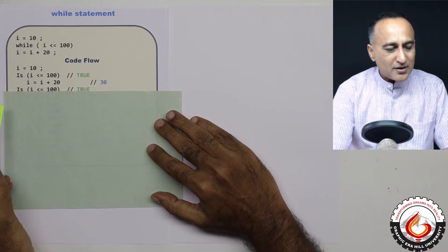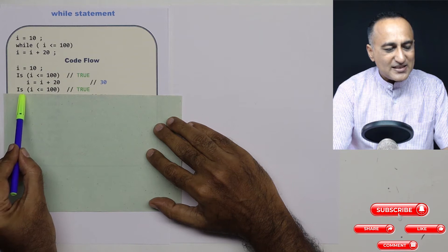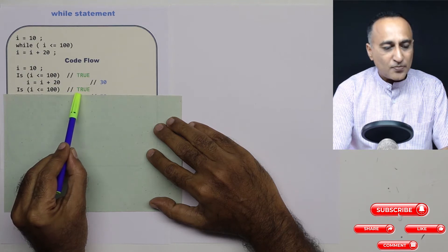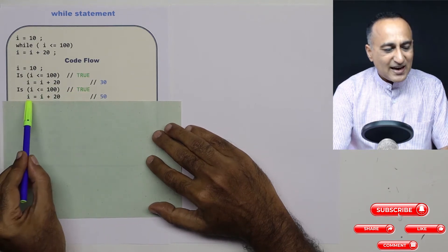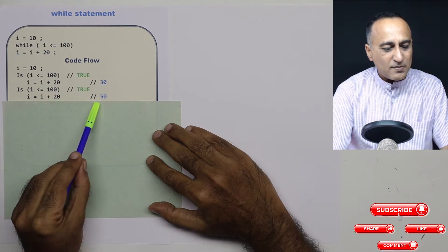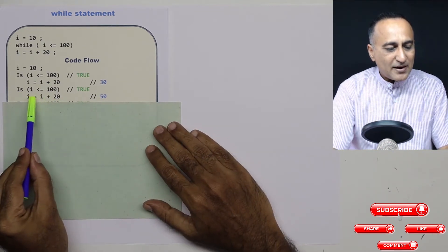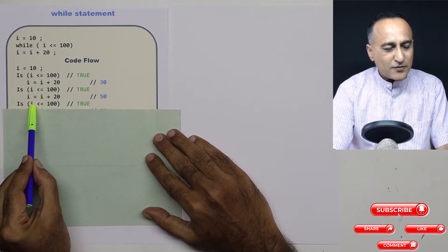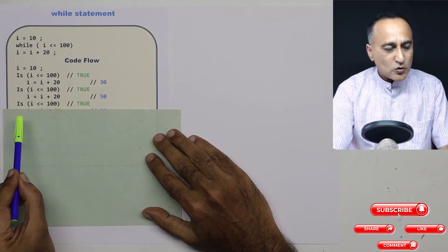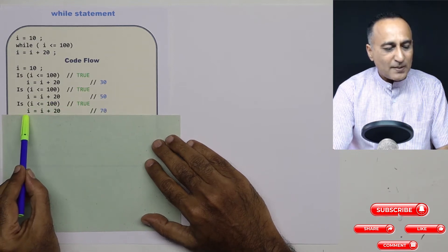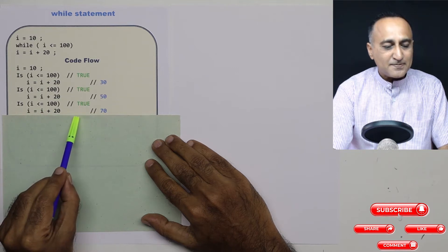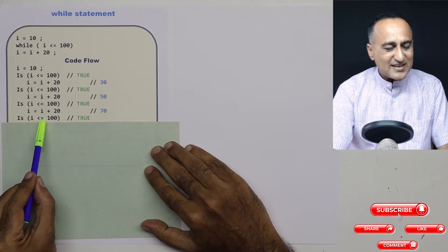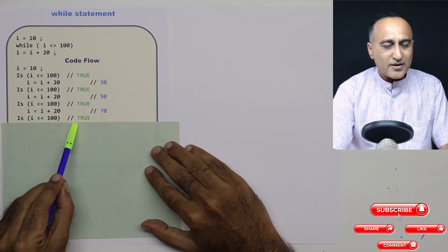In the next step, I am again comparing: is the value of i, which is 30, less than or equal to 100? This is still true, so i is going to be increased by 20 again — i becomes 50. Next I compare: is 50 less than or equal to 100? True, so i becomes 70. Then: is 70 still less than or equal to 100? Still true.